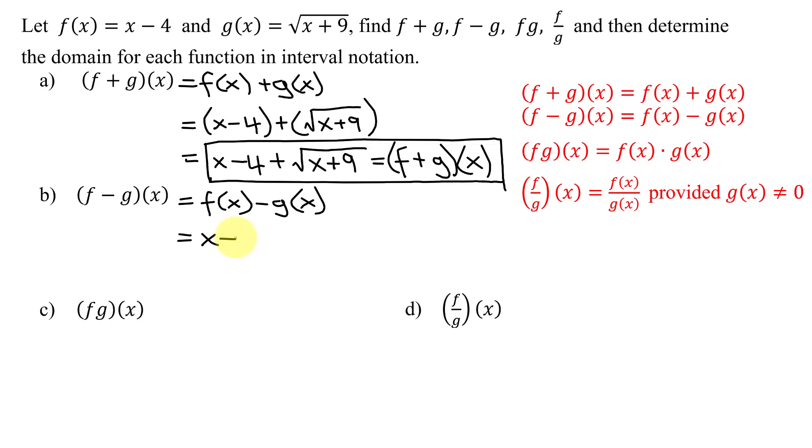f of x was x minus 4, remember I always start out in parentheses, minus g of x is the square root of x plus 9. Now do I need these parentheses? No, there's only one term after the subtraction sign, and I have three unlike terms, can't combine, so my answer is x minus 4 minus the square root of the quantity x plus 9. So that is the difference function f minus g of x.